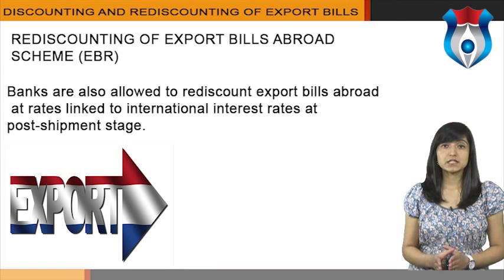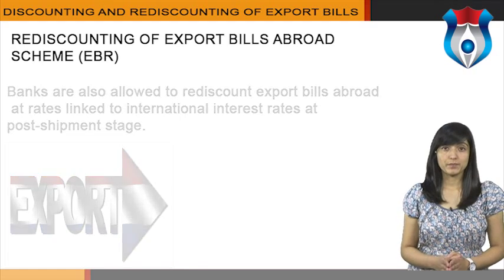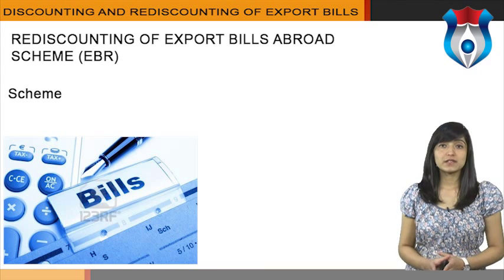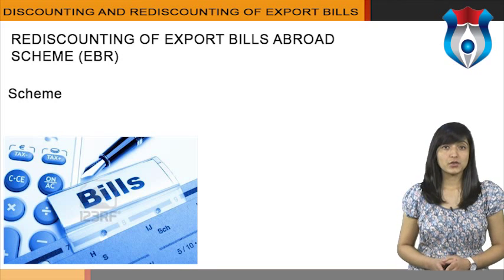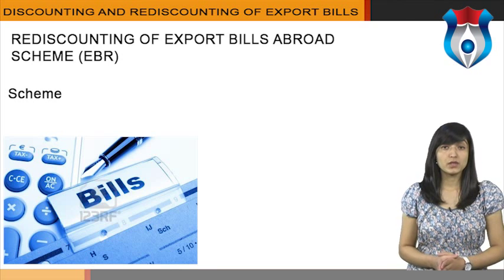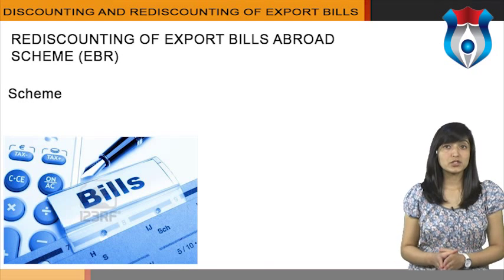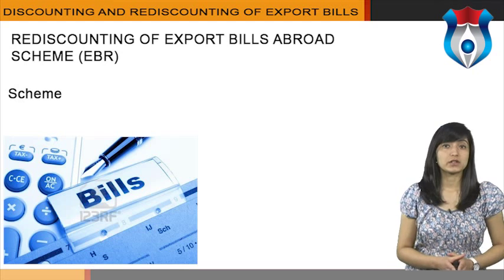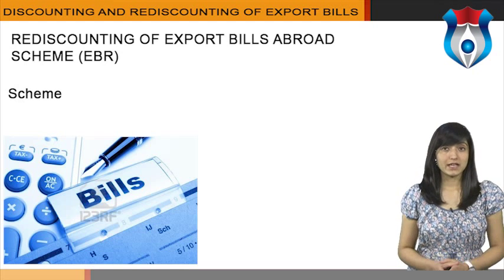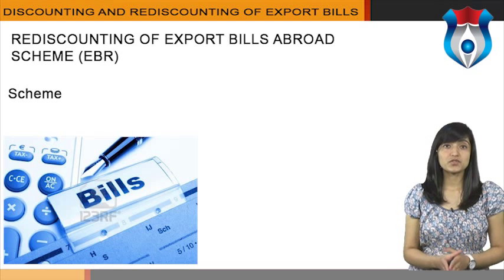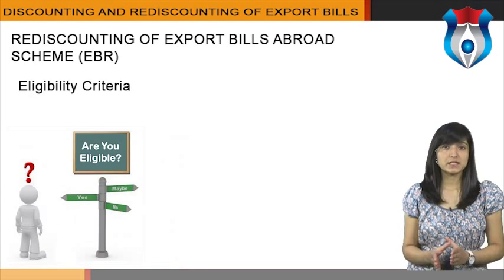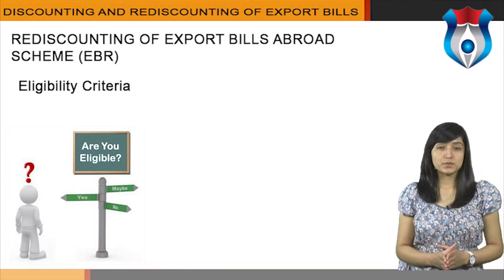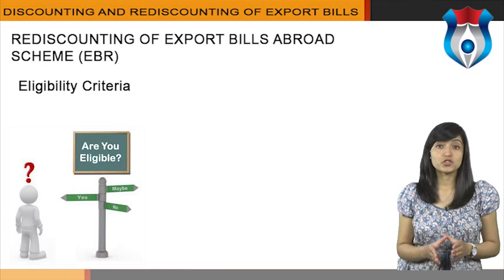Banks are also allowed to rediscount export bills abroad at rates linked to international interest rates at the post-shipment stage under this scheme. It will be comparatively easier to have a facility against a bills portfolio covering all eligible bills than to have a rediscounting facility abroad on a bill-by-bill basis. There will however be no bar if rediscounting facility on a bill-to-bill basis is arranged by a bank for a particular exporter, especially for large value transactions. Banks may arrange a Bankers Acceptance Facility (BAF) for rediscounting the export bills without any margin and duly covered by collateralized documents. The scheme will cover mainly export bills with a usage period up to 180 days from the date of shipment, inclusive of normal transit period and grace period if any.